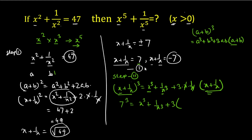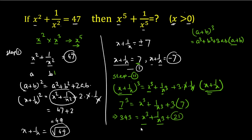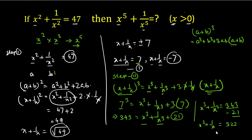7 cubed is 343, so 343 = x³ + 1/x³ + 21. Subtracting 21 from both sides, x³ + 1/x³ = 343 − 21 = 322. Let this be equation 2.